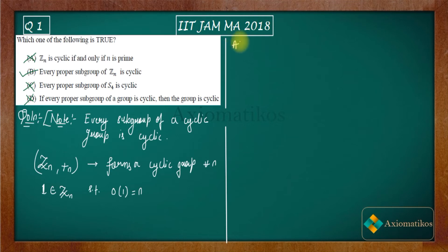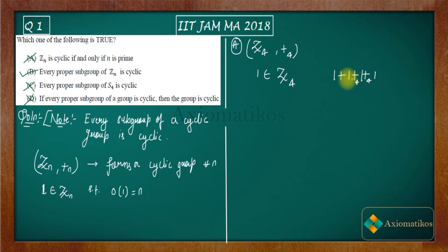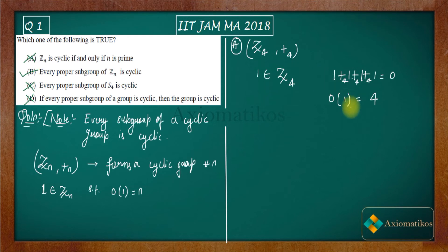Now let us discard the other options for knowledge purposes. Option A says Zn is cyclic if and only if n is prime. Consider Z4 under addition modulo 4. The element 1 belongs to Z4, and adding 1 four times gives zero. You will not reach zero earlier, so the order of 1 is 4.